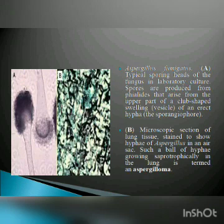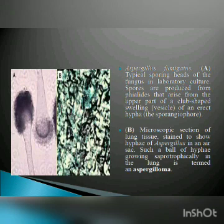Here is a figure of Aspergillus fumigatus. In figure A, a typical sporing head of the fungus in laboratory culture is shown. Spores are produced from phialides that arise from the upper part of a club-shaped swelling of an erect hypha. In figure B, a microscopic section of lung tissue stained to show hyphae of Aspergillus in an air sac. Such a ball of hyphae growing saprotrophically in the lung is termed an aspergilloma.